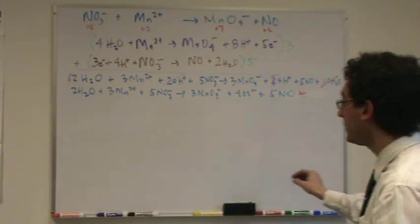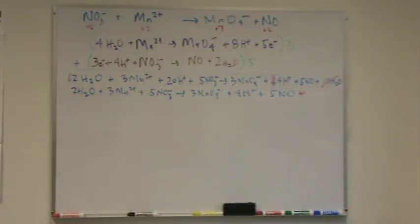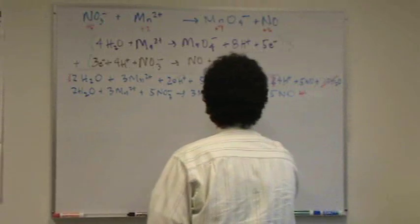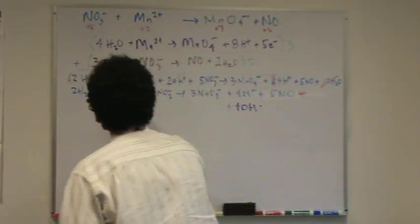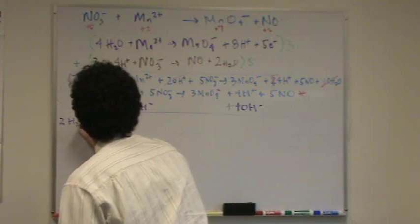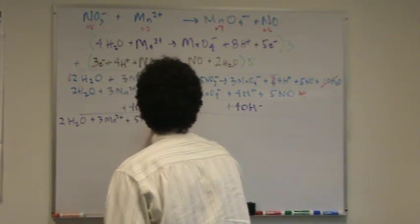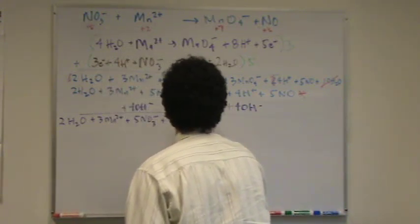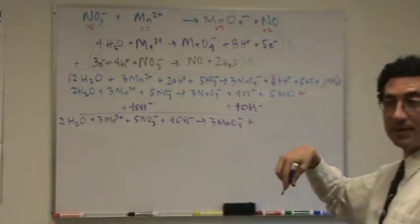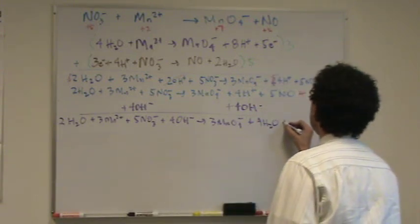Okay. Let's do our basic answer just for fun, so we can get more practice. How many OHs will I need to add each side? Four. You got it. Four because there's four right here. So I just find the H pluses. I've identified them. And so now, four OHs to each side. Add that up. It'll be two waters plus three manganese two plus ions plus five nitrate ions plus four hydroxide ions go to three permanganates plus four H plus and four OH minus. That's four waters. Make sure you don't write eight waters. And then five NO.